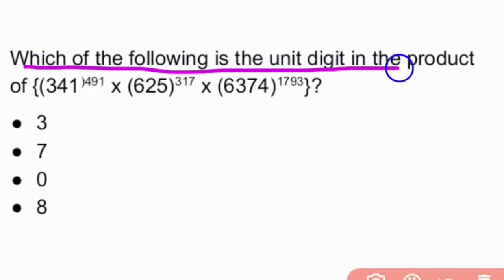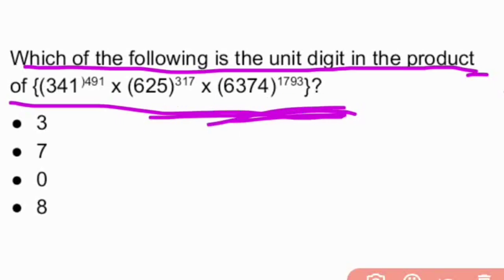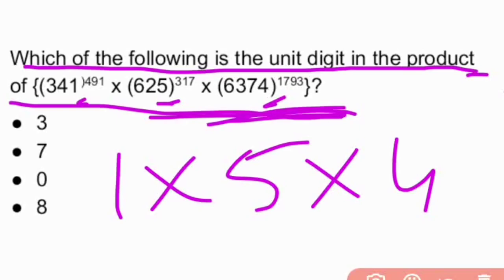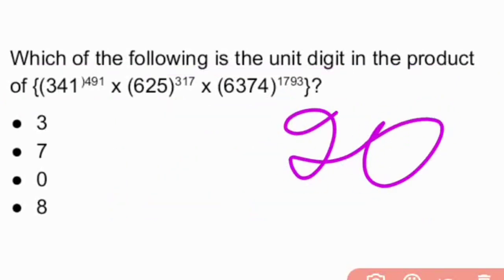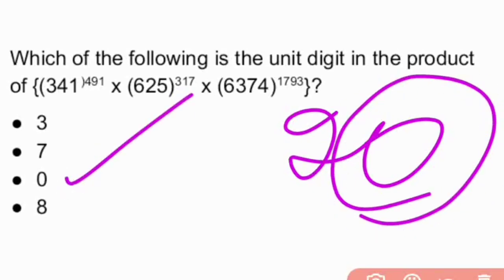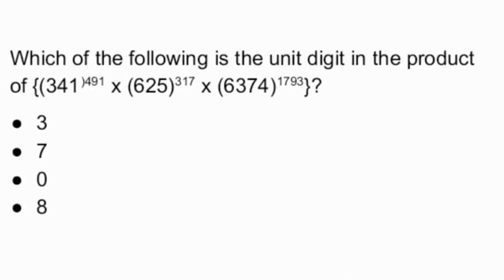Which of the following is the unit digit of the product: 341^491 × 625^317 × 6374^1793? When there's a power, how to solve this problem? Similarly, like in our previous problem, consider only the last digit: 1 × 5 × 4. No matter what the power is, multiply the unit digits: 1 × 5 = 5, 5 × 4 = 20. Our answer is 20. The unit digit in 20, the last place has 0. So our answer is 0, that is option C.